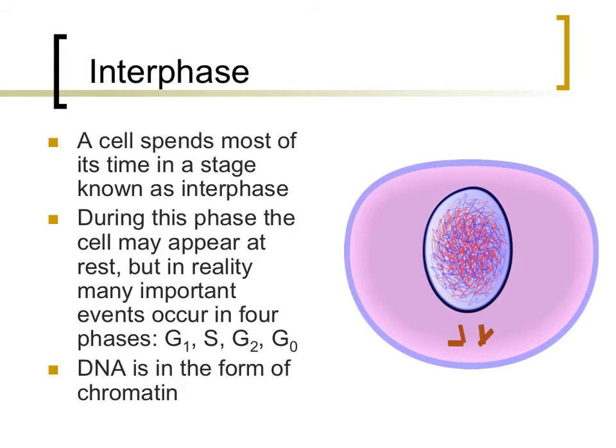Interphase is, by far, the longest portion of the cell cycle. During this phase, DNA is in an uncondensed form called chromatin. While the cell may not look like it is very active during interphase, there are many important events that occur during this stage.